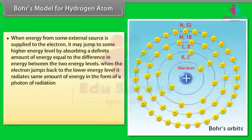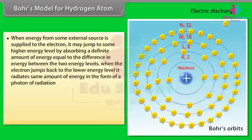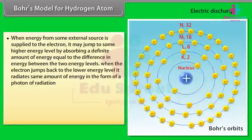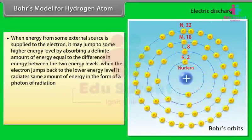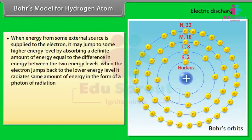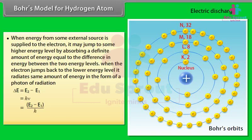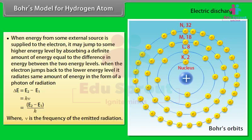When energy from an external source is supplied to the electron, it may jump to a higher energy level by absorbing a definite amount of energy equal to the difference between the two energy levels. When the electron jumps back to the lower energy level, it radiates the same amount of energy as a photon: ΔE = E₂ − E₁ = hν, so ν = (E₂ − E₁)/h, where ν is the frequency of the emitted radiation.